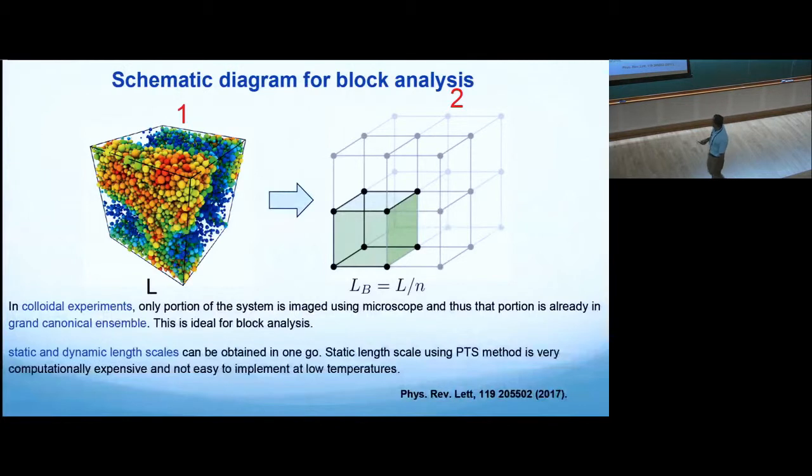Now I want to tell you a certain interesting way of calculating this. This is work recently appeared in PRL. There we proposed a new method of calculating this dynamic and static length scale in one go, and this is applicable even for colloid experiment. The idea is that if you have some system like this model system, then what you do is you break the system into smaller chunks. You make blocks. Then you look at these small blocks, these are different blocks, and look at the statistics of these blocks.